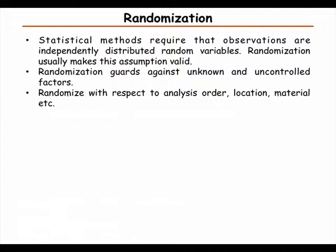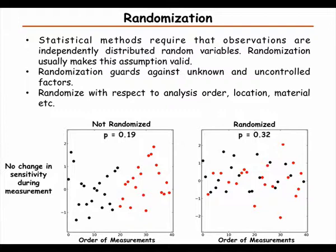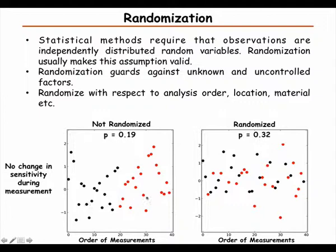One thing we should do is randomize the way we measure things. The main reason is that there are unknown and uncontrollable factors that could affect our experiment, and randomization guards against this. Looking at an example: we have a control and an experiment — red and black dots. If we don't randomize and first measure all the control samples and then all the experimental samples, and there is no change in sensitivity during this, it doesn't really matter — we still get a high p-value, so there's no difference.